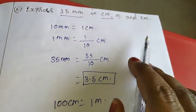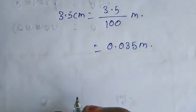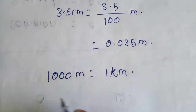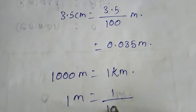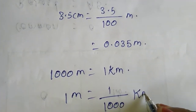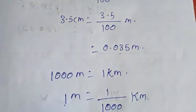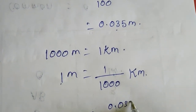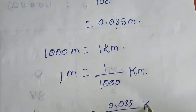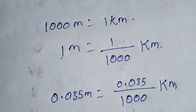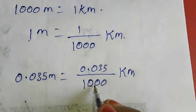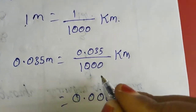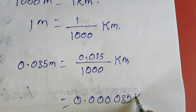Again, I am going to express in kilometers. 1000 meters equal to 1 kilometer, so 1 meter equals 1/1000 kilometer. We have 0.035 meter, so 0.035 divided by 1000 kilometers. We need 3 digits, so we write 0.000 — three zeros — and then the digits, giving 0.000035 kilometers.